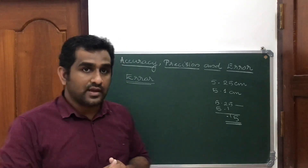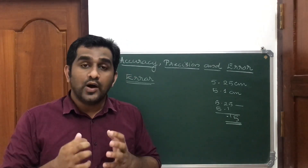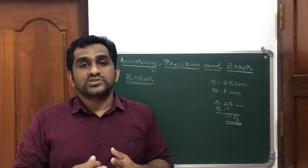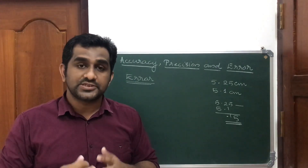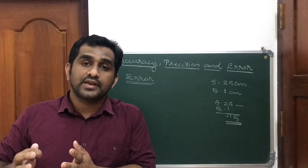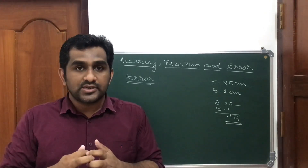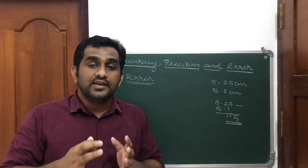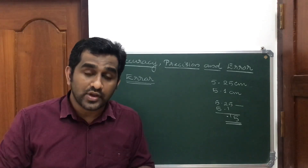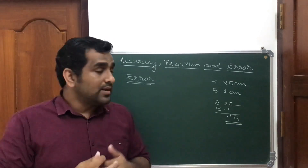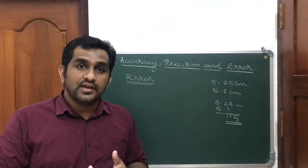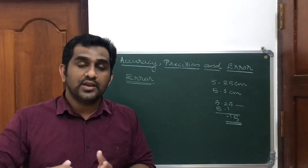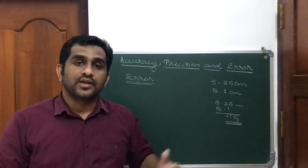To summarize: accuracy means how close the measured value is to the true value. Precision tells us the maximum limit up to which a measurement can be taken with an instrument, and it depends on the least count. Error is the difference between the true value and the measured value. Different types of errors will be covered in the next class. Thank you.